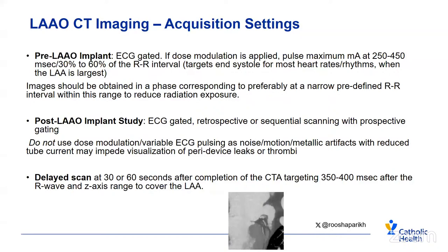For post-left atrial appendage occlusion implant studies, we want this also to be ECG-gated — either retrospective or sequential scanning with prospective gating with a larger interval. You want systole as well as diastole. You do not want to use dose modulation or variable ECG pulsing at this type of imaging, since there's noise, motion, metallic artifact, and reduced tube current may impede visualization of peri-device leaks and thrombi. For both types of scans, we want a delayed scan at 30 or 60 seconds after the initial CTA, targeting about 350 to 400 milliseconds after the R-wave, covering the left atrial appendage.